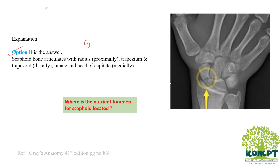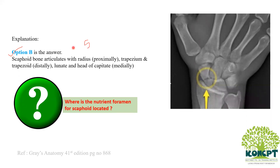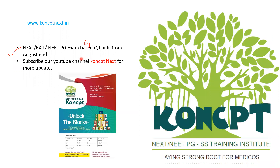Here's one more question: we saw that branches of the radial artery enter through the distal end of the scaphoid — where is the nutrient foramen for the scaphoid located? If you know the answer, please enter it in the comment section. Do remember to subscribe to the Concept YouTube channel and download our Concept app from the Play Store. Hope this presentation was useful — give your feedback. Thank you.